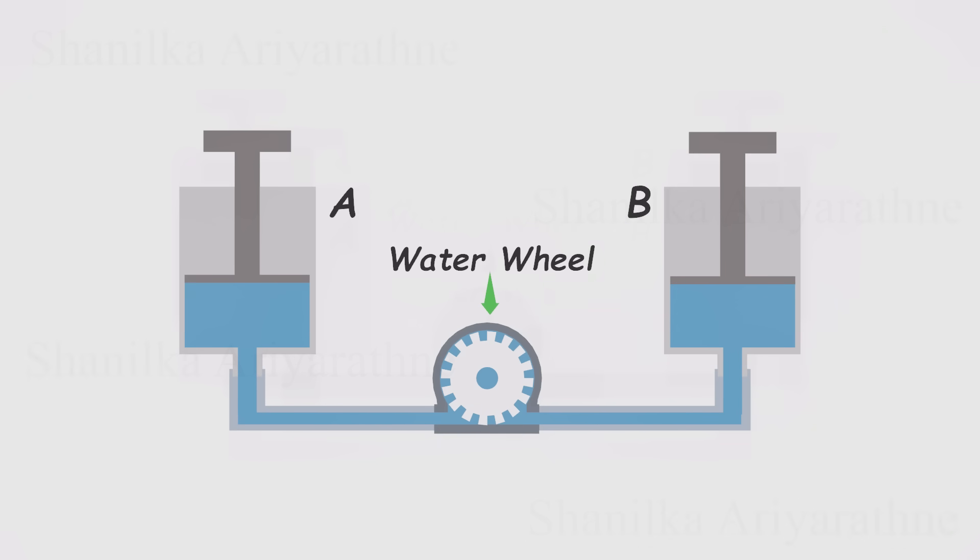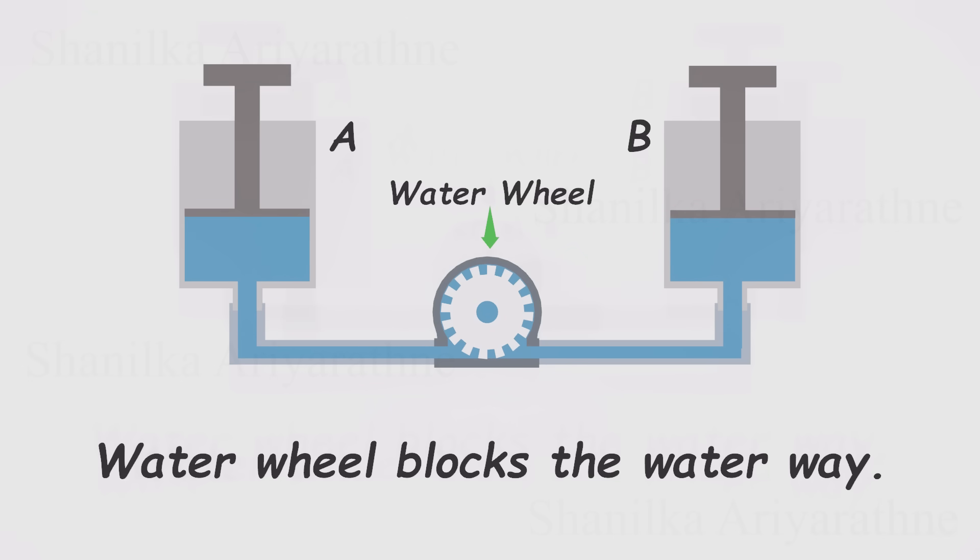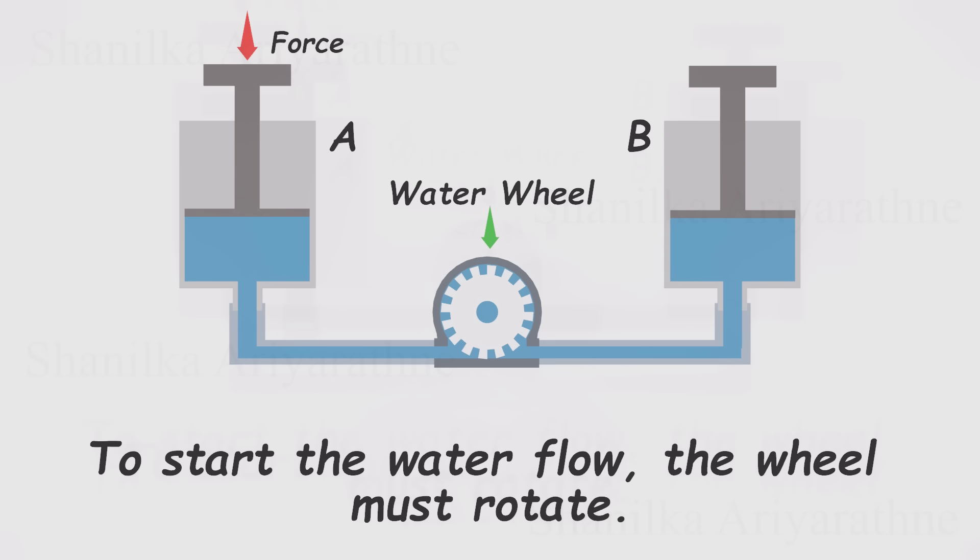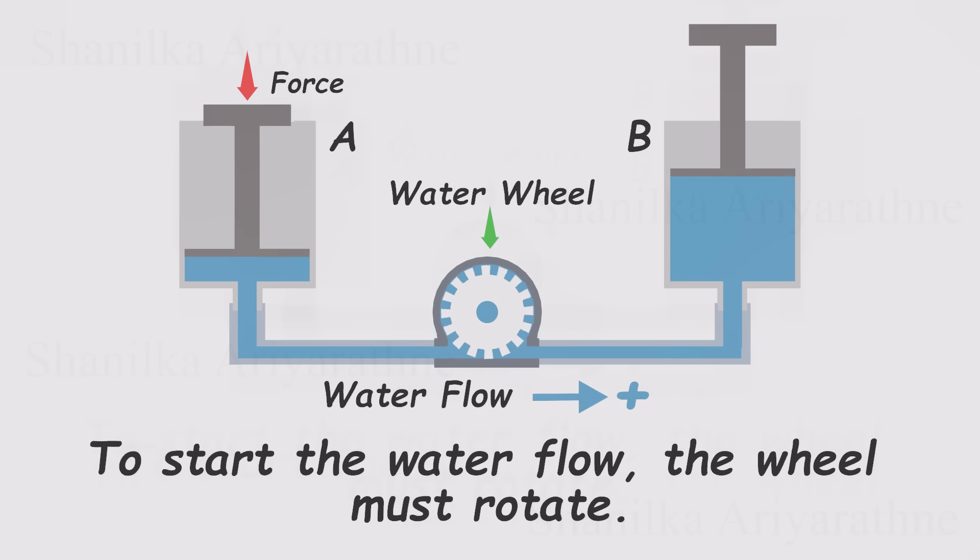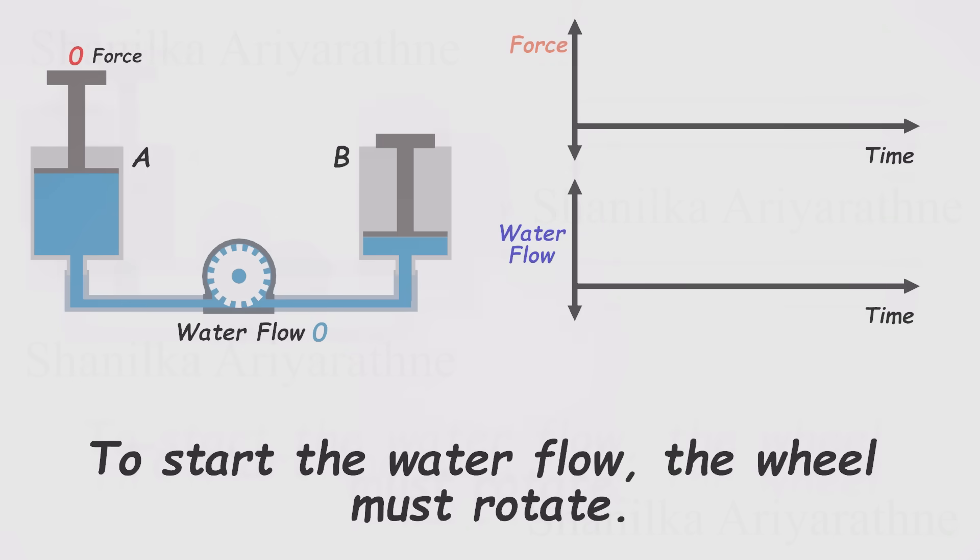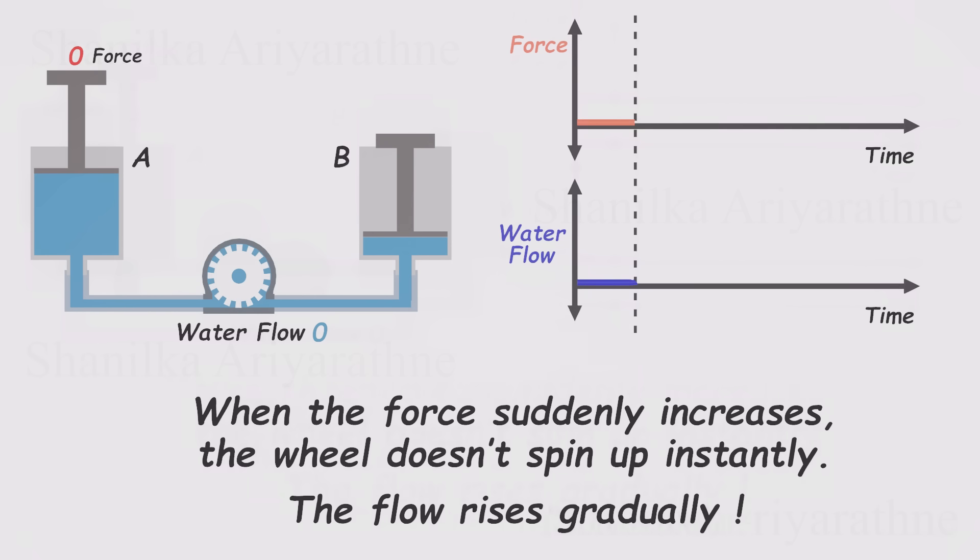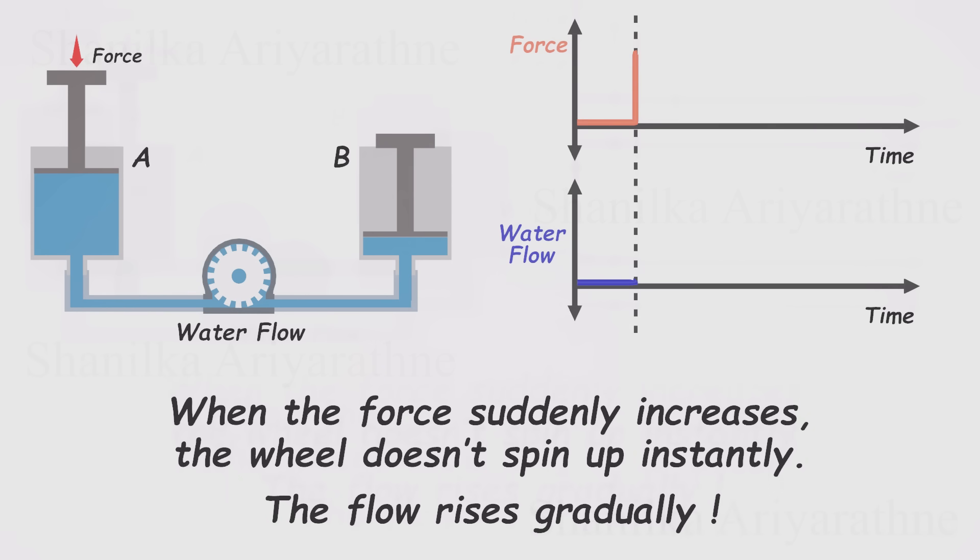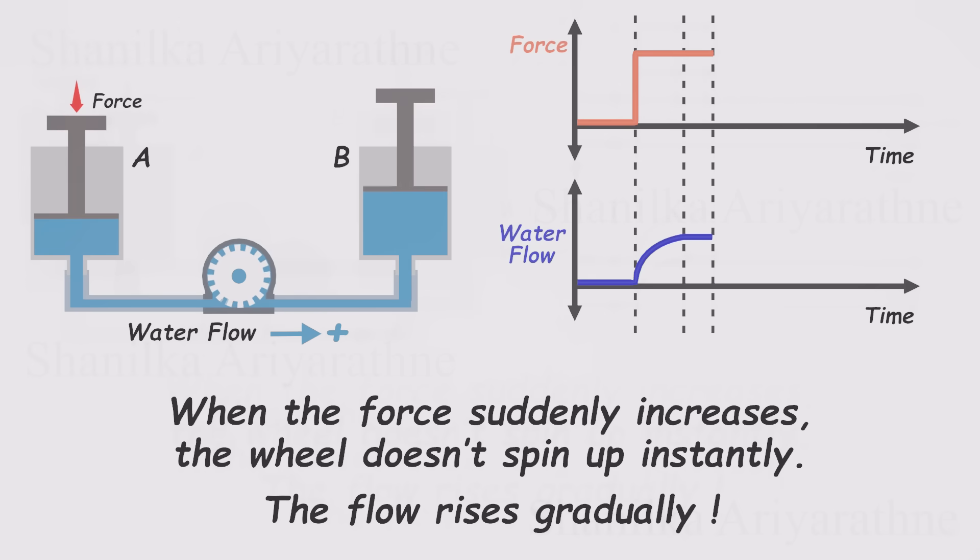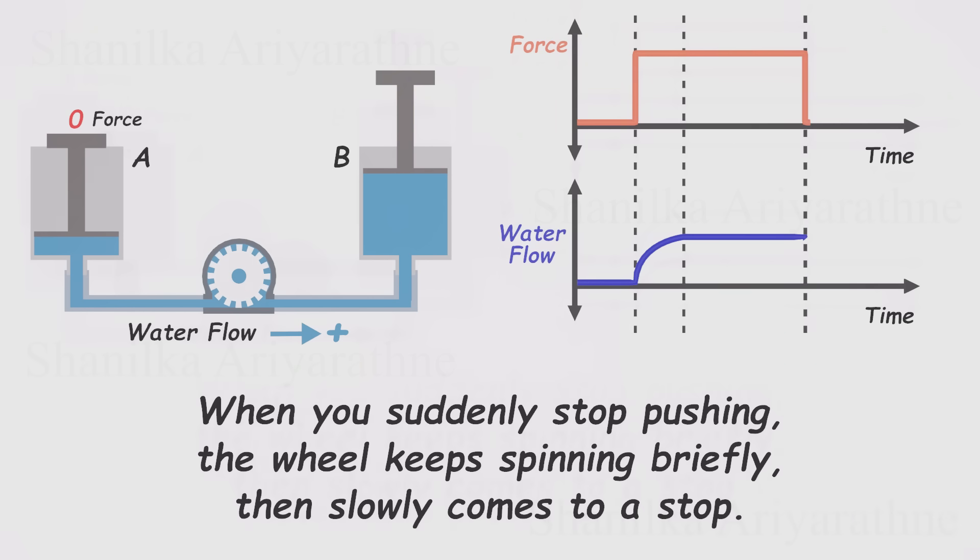But what if we tweak the setup a little? This time, let's put a heavy water wheel right in the middle of the pipe. Now when you push on piston A, the water can't move freely until the wheel starts to spin. And because the wheel has inertia, it doesn't spin up instantly. It takes time to get going. As it speeds up, the water flow gradually increases, and eventually it settles in to a steady rate. If we were to plot this, we'd see something interesting. At first, with no push on the piston, there's no flow at all. Then, when we suddenly apply force, the water doesn't surge through right away. The wheel has to spin up first. The flow ramps up slowly until it reaches a steady level. And when you stop pushing, the wheel doesn't just freeze in place. It keeps spinning for a while, using its stored momentum to keep the water moving before finally slowing down and stopping.